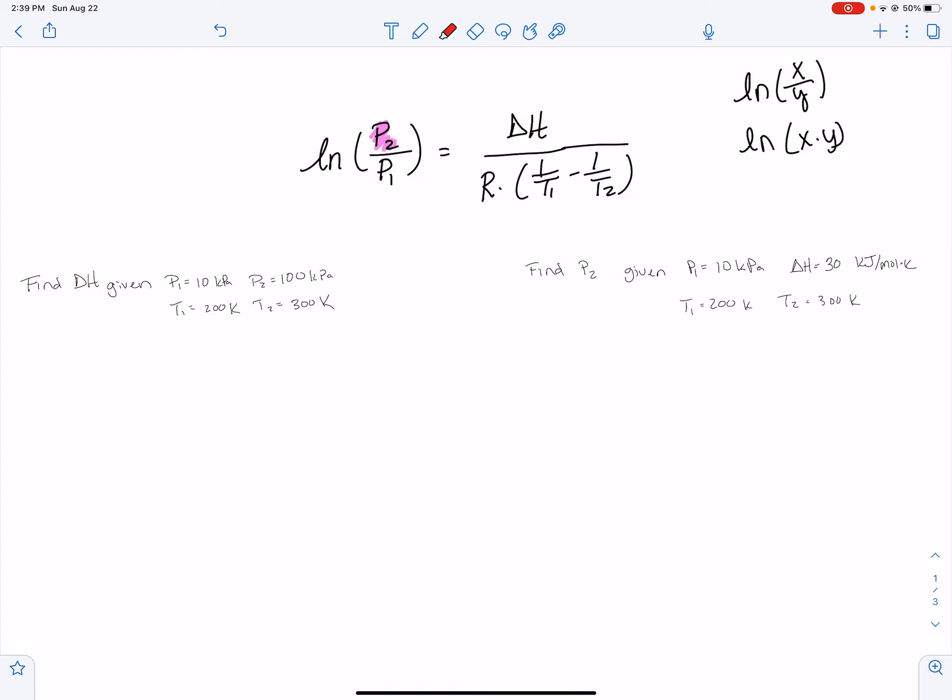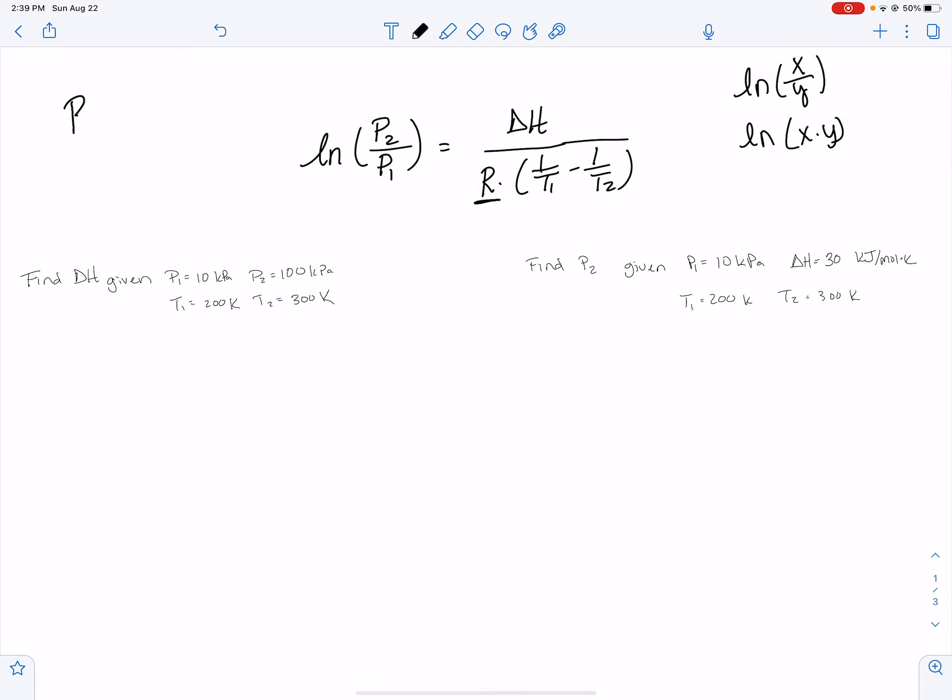A few little pieces of information about this. First of all, we have an R in this term. The R you need to use with the Clausius-Clapeyron equation is 8.314, and watch these units: joules per kelvin, and then this one right here is a mole.